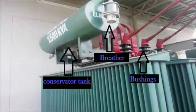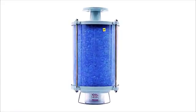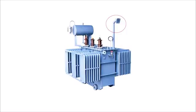The breather filters the air that enters or exits the conservator tank when the oil level inside it changes. The explosion vent is used to expel boiling oil in the transformer during heavy internal faults in order to avoid the explosion of the transformer.